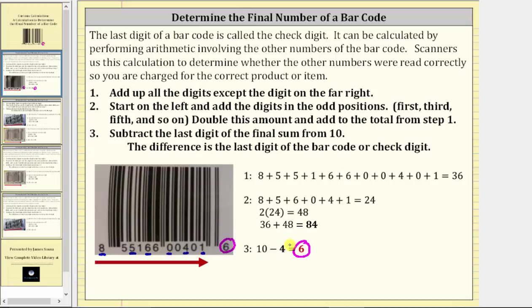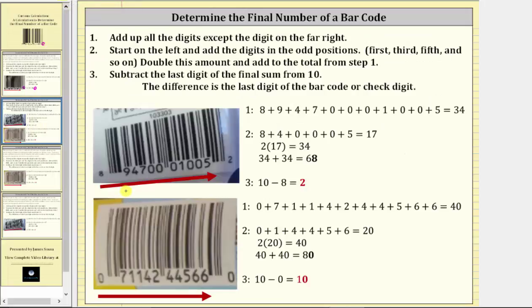Let's look at a couple more examples. Looking at this barcode, notice how the check digit is this two here. Step one: we add all the digits in the barcode except the check digit, or except the two, which gives us 8 plus 9 plus 4 plus 7 plus 0 plus 0 plus 0 plus 1 plus 0 plus 0 plus 5, which is shown here. Notice the sum is 34.